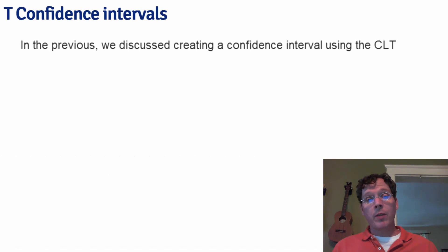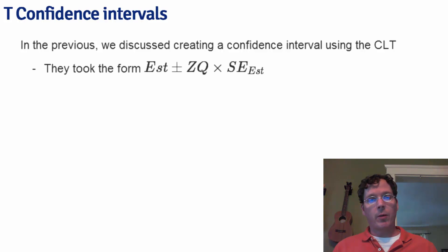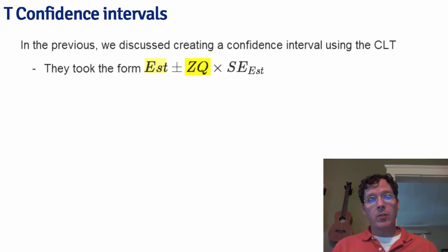In the previous lecture, we discussed creating confidence intervals using the central limit theorem. All the intervals we discussed took the form of estimate plus or minus a quantile from the standard normal distribution times the estimated standard error of the estimate.